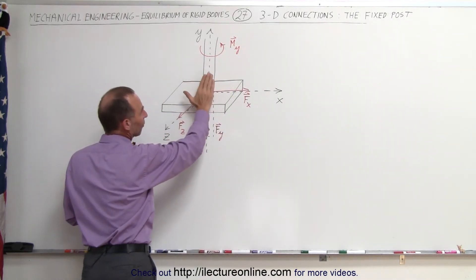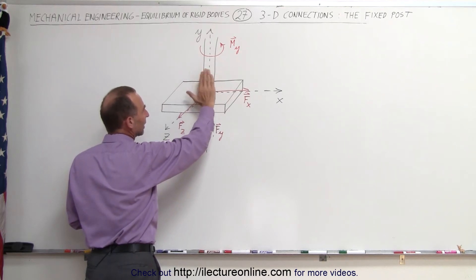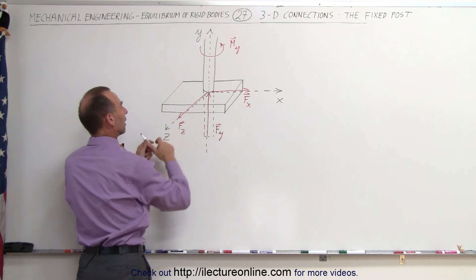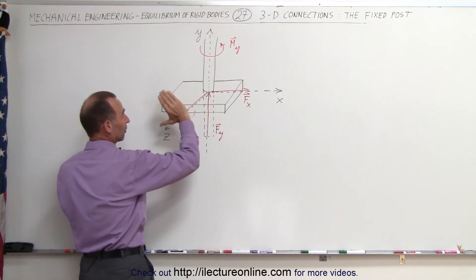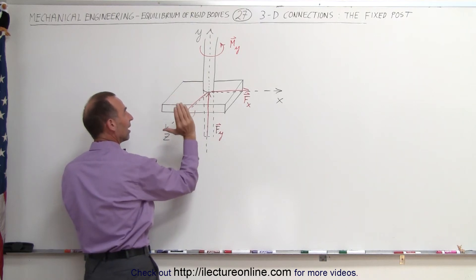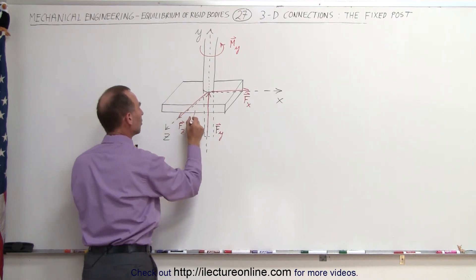Since the post cannot rotate in this direction right there, there's a moment created about the z axis. So again, you have a moment going like this. The best way to find the direction of the moment is point your thumb in the direction of the z axis and your fingers will curl in the direction of the moment.